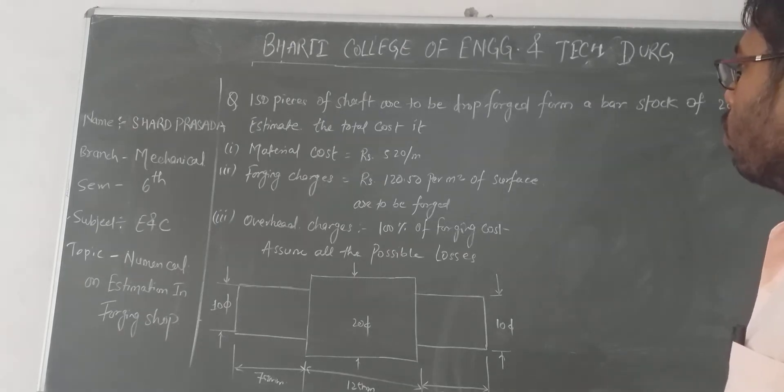Estimate the total cost if material cost is 5.20 per meter, forging charges are 120.50 per meter square of surface area to be forged, overhead charges 100% of forging cost. Assume all the possible losses.